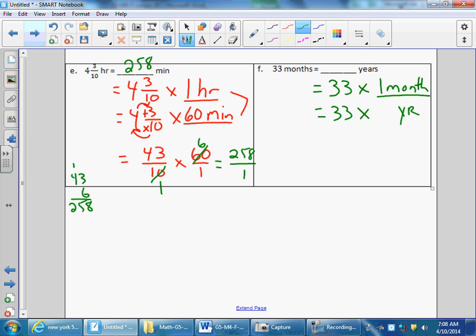So, I need to say, is it one month equals twelve years, or one-twelfth of a year? Well, certainly one month is not equal to twelve years. So, I do not want to multiply by twelve. One month is equal to one-twelfth of a year. So, I have thirty-three times one divided by twelve. Thirty-three twelfths.